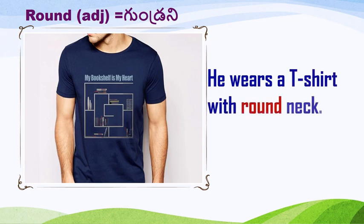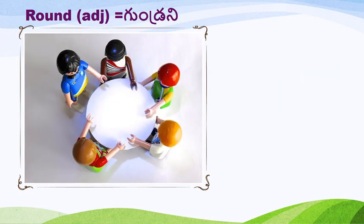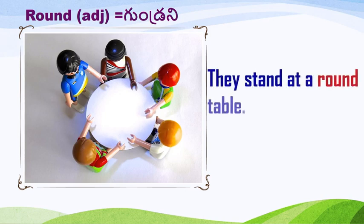Round neck — round neck. In the t-shirt there is a round neck. What do you see in this picture? There are five boys. They stand at the round table. What type of table is it? It is a round table — round shape table. Yes, it is a round table. Very good.